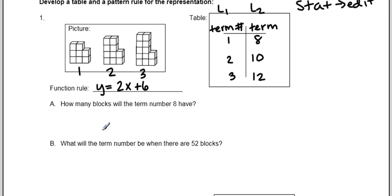A says, how many blocks will the term number 8 have? My term number is referring back to this left side of the table, which the left side of my table is my x's. So this is telling me x equals 8. So I'm going to take that and plug it into my function rule. So I have y equals 2, and instead of x, I'm plugging in an 8 plus 6.